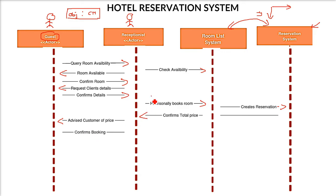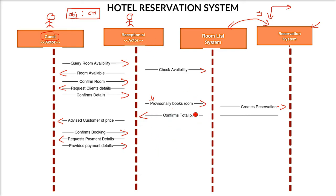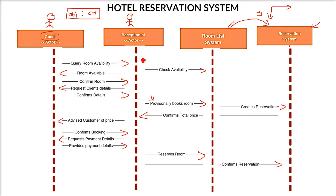Once the guest is informed of the price, they confirm the booking. After booking is confirmed, the receptionist asks for payment details — how the guest will pay: credit card, cash, or any other mode. The guest provides payment details. Then it goes to the room list system to resolve the actual room — previously provisional, now finalized. The reservation system confirms the reservation, and finally the receptionist gives confirmation back to the guest that the reservation is confirmed.